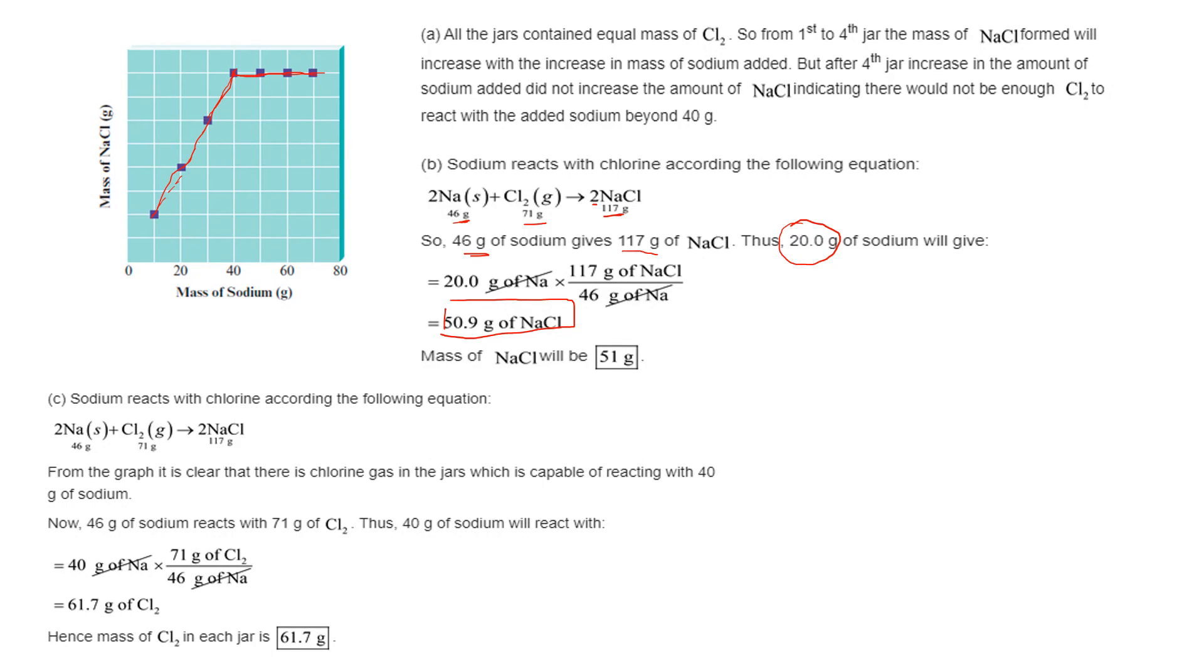We're basically using proportion for almost all the questions. When you come to see, we're doing the same thing. 46 is giving you 71, so what will 40 give you? Because if you look at the graph, realize that at 40 the reaction stopped, so that's where the 40 is coming from.